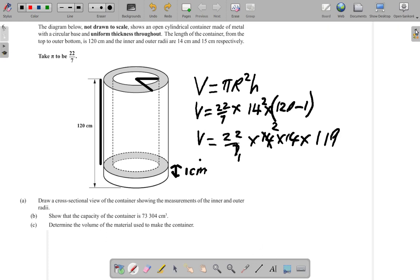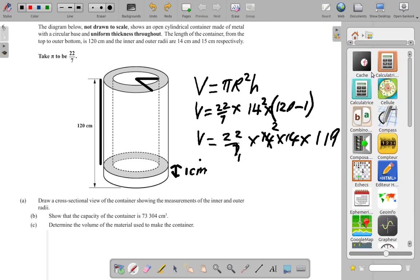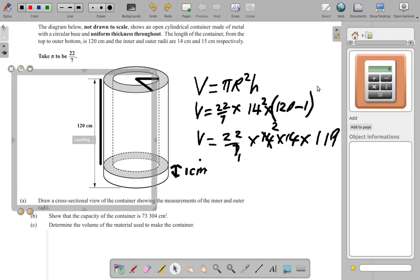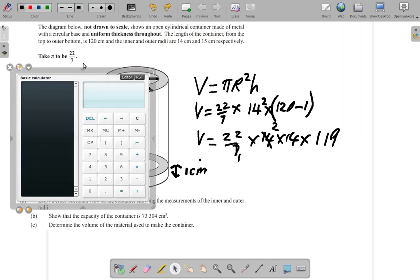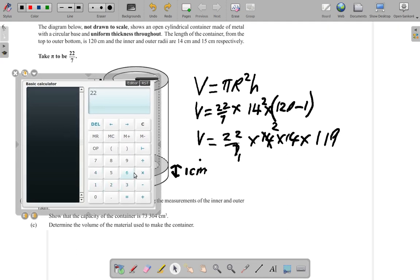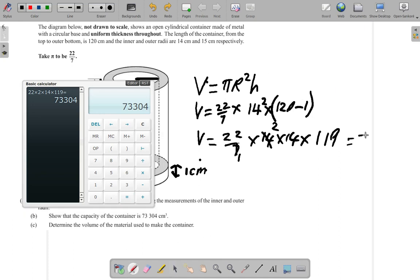So in this case, I want a calculator. What I would have is 22 times 2 times 14 times 119 equals. So in this case what I have as my volume is 73,304 centimeters.